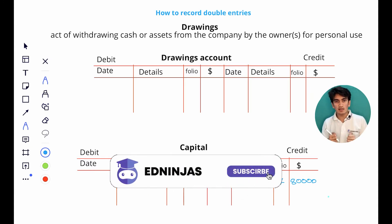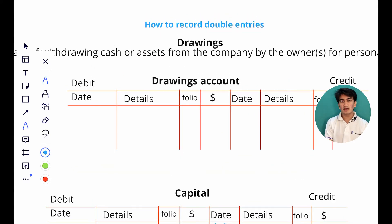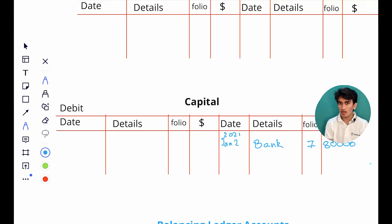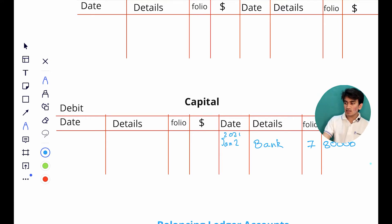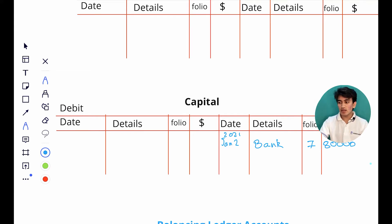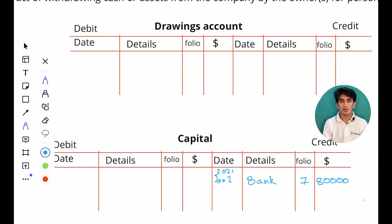Let's make a practice transaction of drawings to understand the double entry. Before that, let us understand that we already had a capital account at the start of the business, where we recorded the amount that Alex gave to the business. Alex had given eighty thousand dollars worth of cash into the bank account of the business, that's why a capital account was credited. But now when Alex is taking money away from the business, why aren't we using the capital account but creating a separate drawings account?